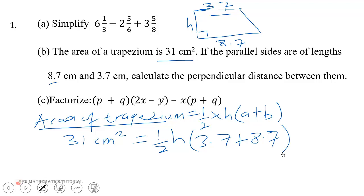We need to simplify this, so let's add 3.7 and 8.7, and that will give us 12.4. So we have half times h times 12.4 is equal to 31 centimeters squared.